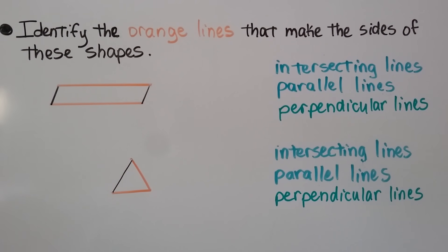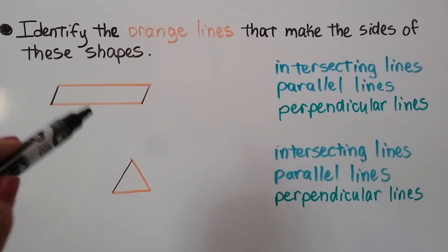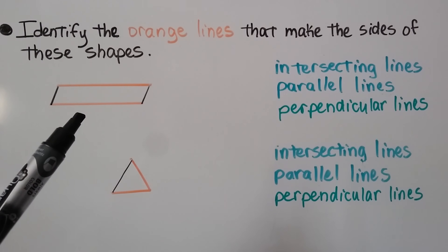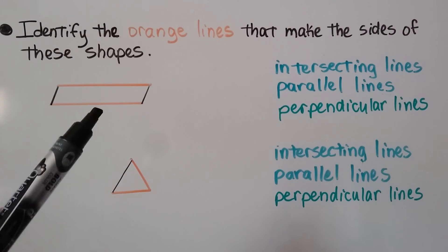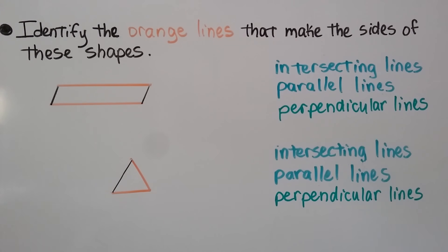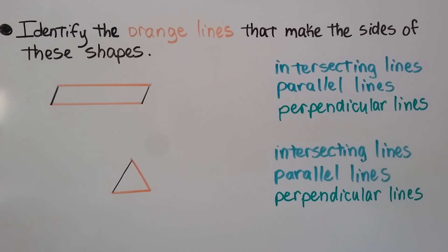We need to identify the orange lines that make the sides of these shapes. So in this quadrilateral, do the orange lines intersect? No, they don't. Are these orange lines parallel lines? If you said yes, you're right. They are parallel lines.